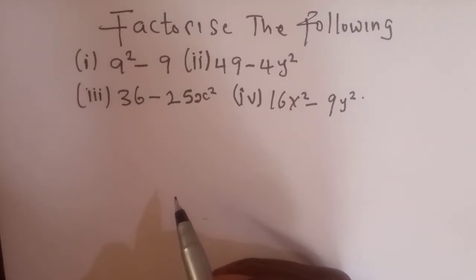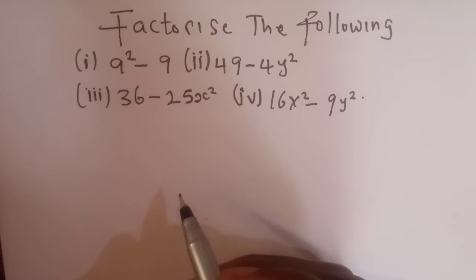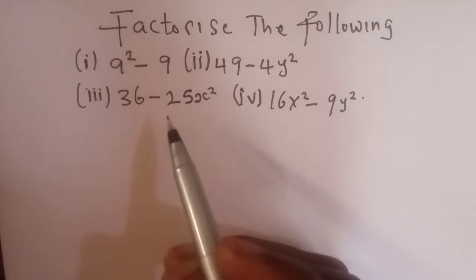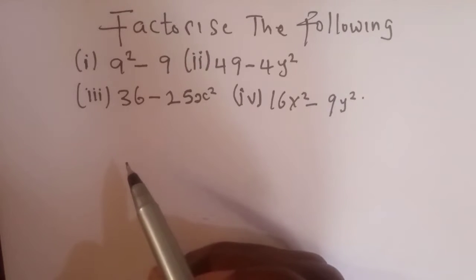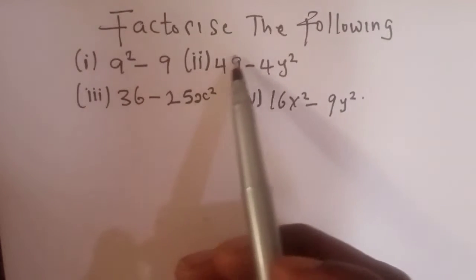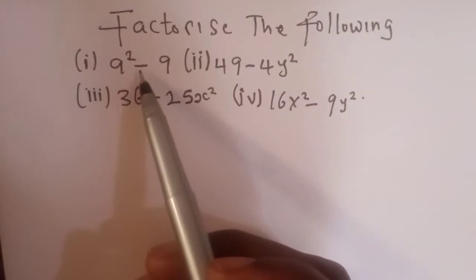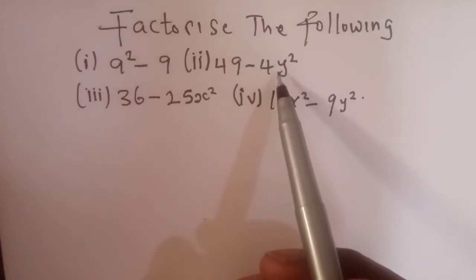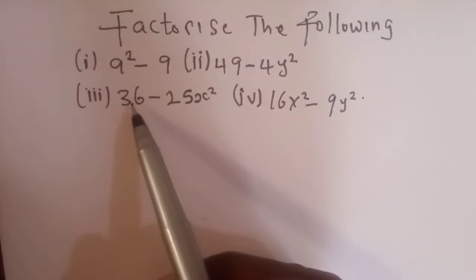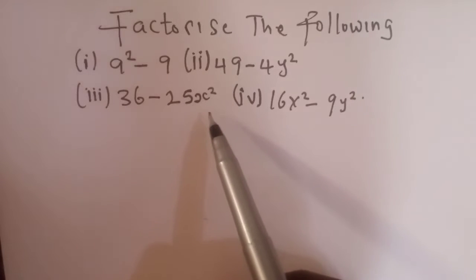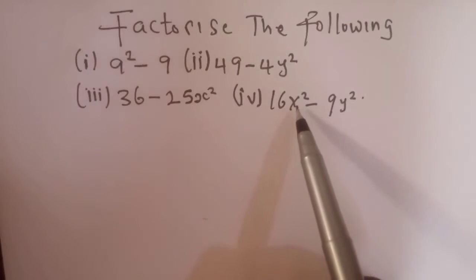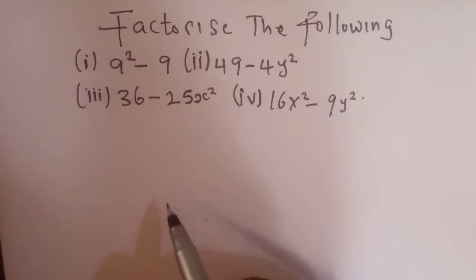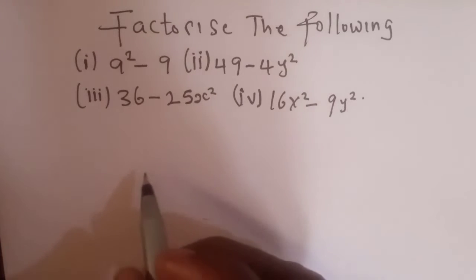Hi everyone, welcome to my class. Today we want to look at the difference of two squares. Factorize the following: question 1 is a² minus 9; question 2 is 49 minus 4y²; question 3 is 36 minus 25s²; and question 4 is 16s² minus 9y². We want to look at how we can quickly solve these in just 20 seconds.